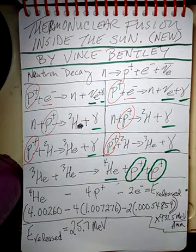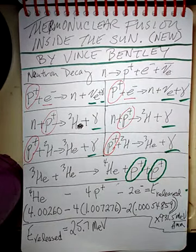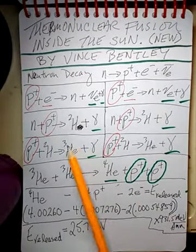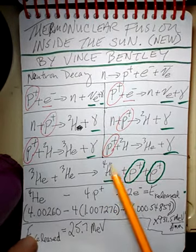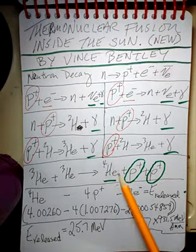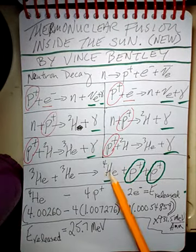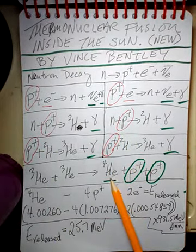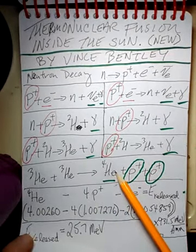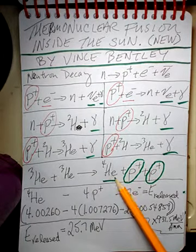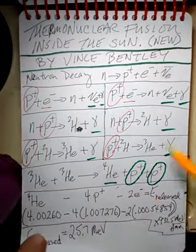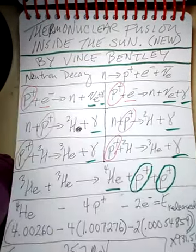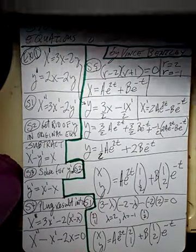After you burn enough hydrogen inside a star and convert it into helium, you'll be left with quite a bit of helium in the core. The pressures and temperatures will get greater and greater. The Sun will continue doing what it's doing now for probably another three to five billion years. But after all the hydrogen is converted into helium, the temperatures will go up and the helium will start to fuse together in this manner.